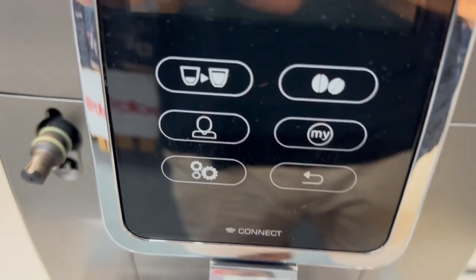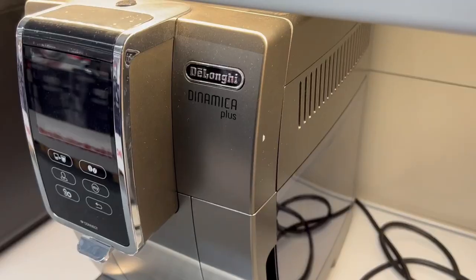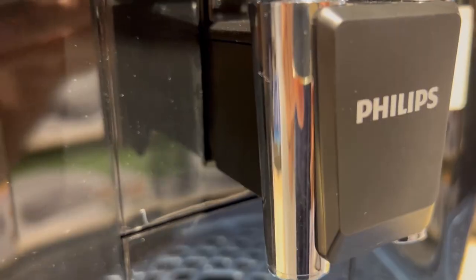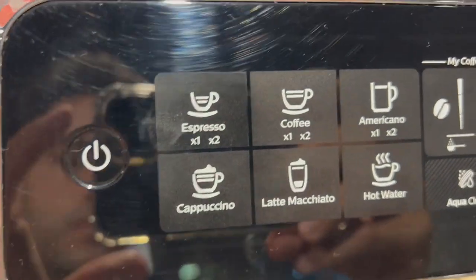Two of the best and most popular coffee makers out there, but only one choice. Let's compare the DeLonghi Dynamica Plus and the Philips 3200 and see which one comes out on top.